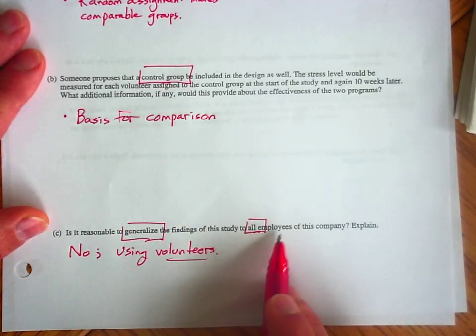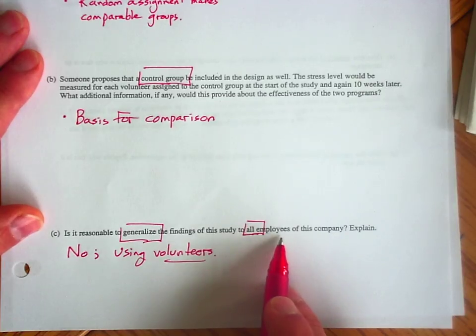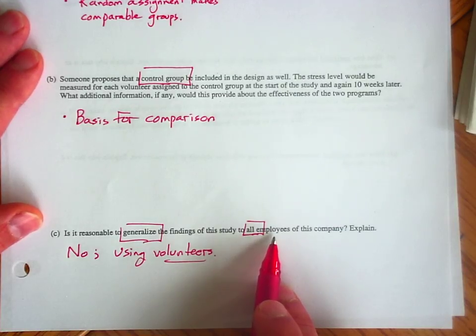In other words, if I wanted to generalize to the entire company, I would have to be randomly selecting employees from throughout the company and using them within this experimental design.